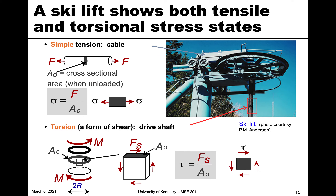Let's look at some examples of different stress states, starting with simple tension. We have a rod shape with a cross-sectional area perpendicular to the force, and the force is moving away from the cross-sectional area. A classic example is a cable — on a bridge or a ski lift, the cable is under tension. If it weren't under tension, it would be slack.